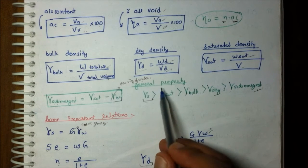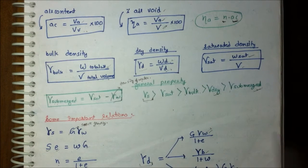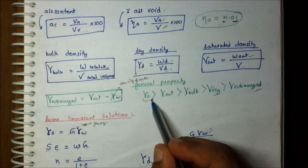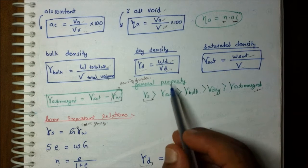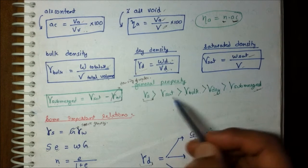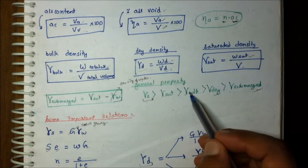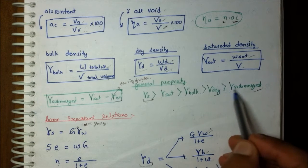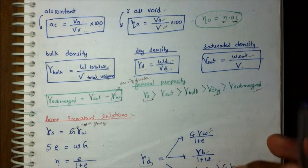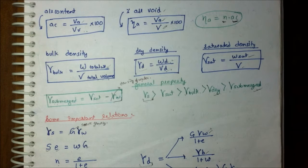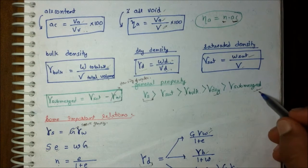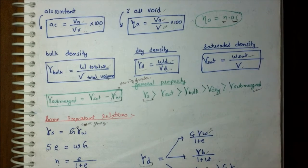There is a general ordering among all densities. Gamma solid is the weight of solid upon volume of solid only. In descending order: gamma solid, then gamma saturated, then gamma bulk, then gamma dry, and gamma submerged is always the least — because when submerged in water, buoyancy reduces the thrust and therefore the effective weight and density.